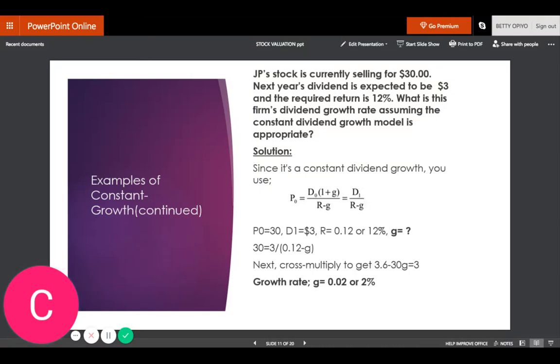Here is another example of a constant growth model. JP's stock is currently selling for $30. Next year's dividend is expected to be $3, and the required return is 12%. What is this firm's dividend growth rate assuming the constant dividend growth model is appropriate?